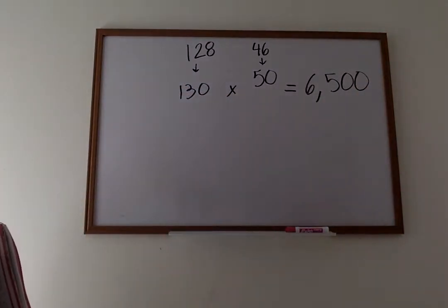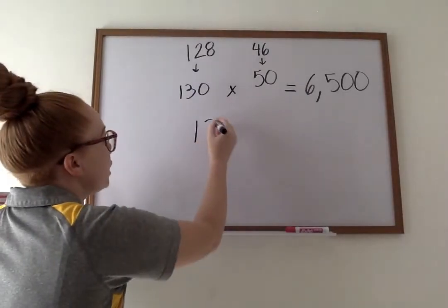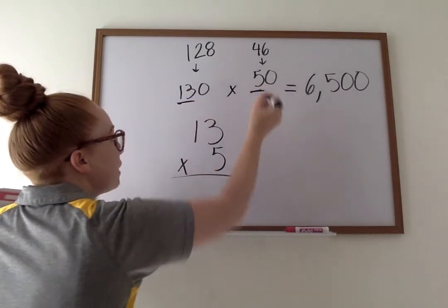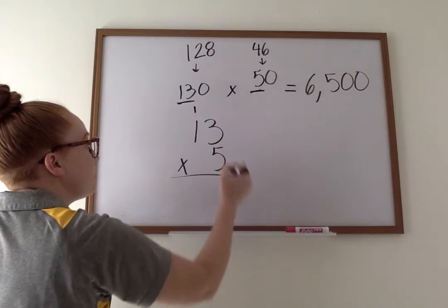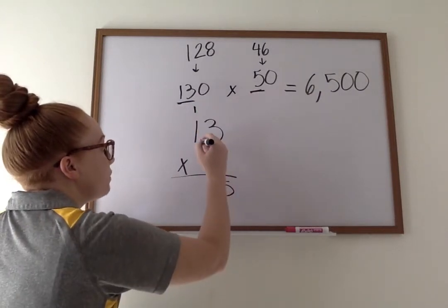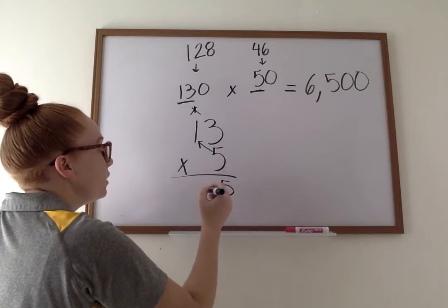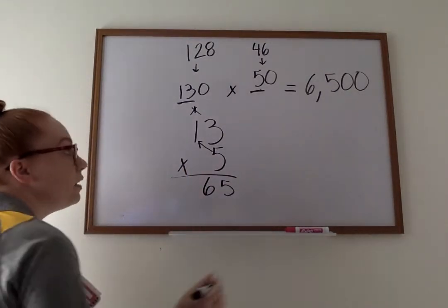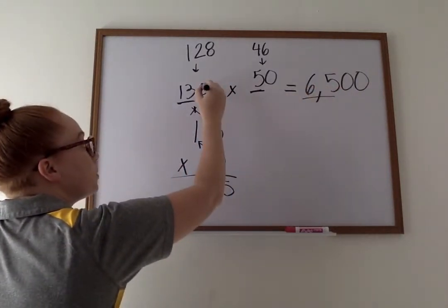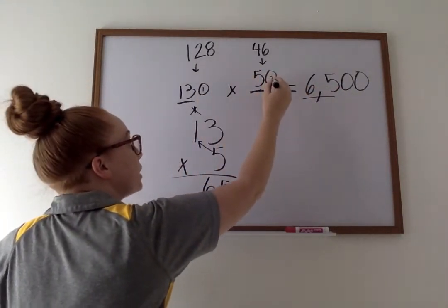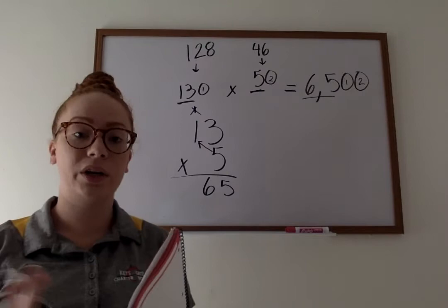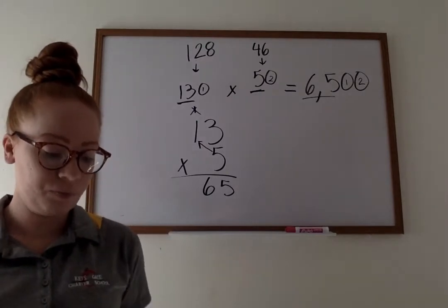So you might have thought, wow, you solved that problem really quickly. I didn't even know what happened. Well, what you can do, a little trick, you can take 13 times 5. These are our beginning numbers. We know 5 times 3 is 15. 5 times 1 is 5, plus 1 is 6, 65. Then you can write down your 65, count your zeros, one zero, two zeros, and then you can add your two zeros at the end. So that's a little quick trick where you can do it a little quicker. So that's part A.